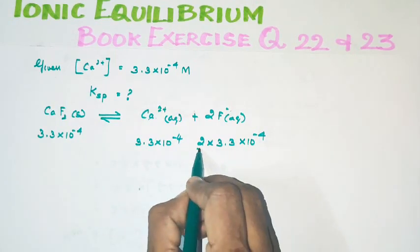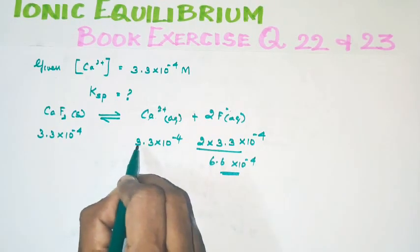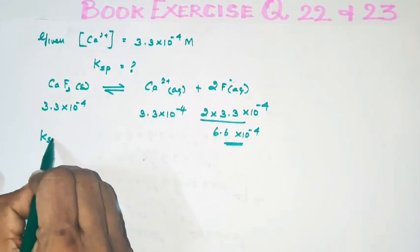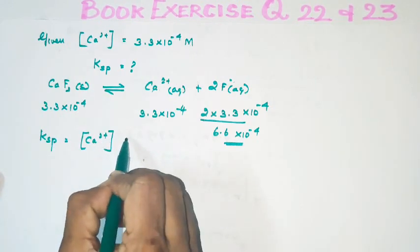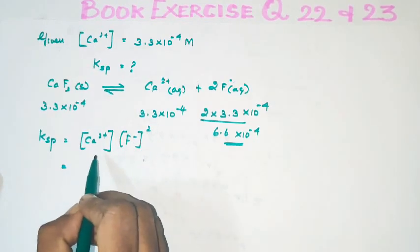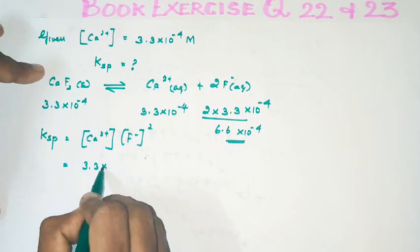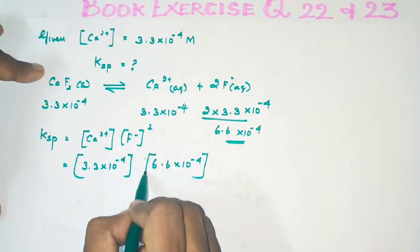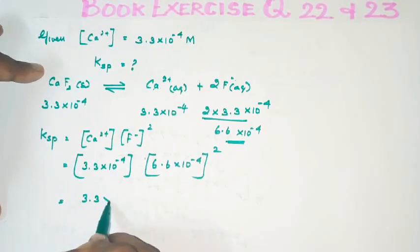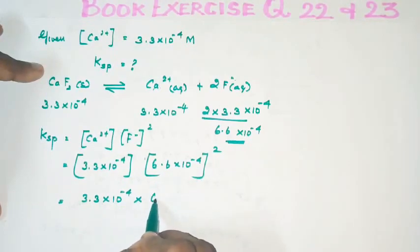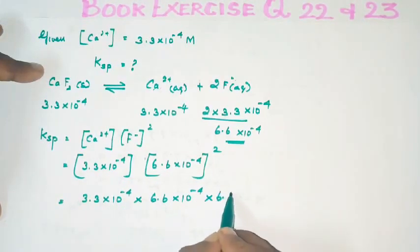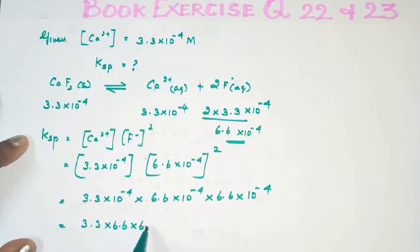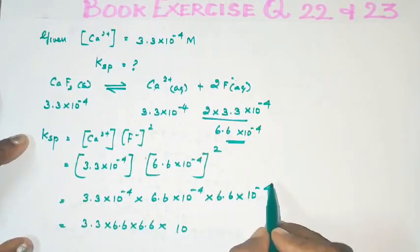So if Ca²⁺ concentration is 3.3 × 10⁻⁴ M, then F⁻ concentration is 2 × 3.3 × 10⁻⁴ = 6.6 × 10⁻⁴ M. The Ksp expression is: Ksp = [Ca²⁺][F⁻]². Substituting: Ksp = 3.3 × 10⁻⁴ × (6.6 × 10⁻⁴)². Powers: 10⁻⁴ × 10⁻⁸ = 10⁻¹².